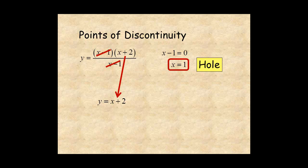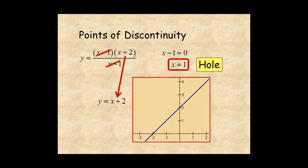Here's the graph of that line. The graph of the rational function is the same as the graph of the line everywhere except at x equal 1, where it's not defined, so you draw a hole at that point.